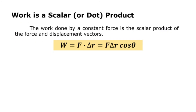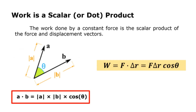Work is a scalar or dot product. The work done by a constant force is the scalar product of the force and displacement vectors. Recalling our recent lesson, the formula for the scalar or dot product is A dot B times cosine theta. Comparing it with the formula for work, we can see that A is the force, B is the displacement or delta R, while cosine theta remains the same for both.